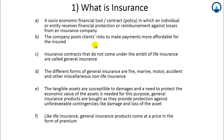Insurance contracts that do not come under the ambit of life insurance are called general insurance. The different forms of general insurance are fire, marine, motor, accident, and other miscellaneous non-life insurance. In short, apart from the product called life insurance, all other insurance products are general insurance. One more product to add here is health insurance.